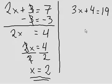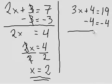On this side we need to do the same thing. First I want to have 3x by itself on the left side of the equation in order to solve it. So I'm going to take away 4 from this side and take away 4 from the right side as well.